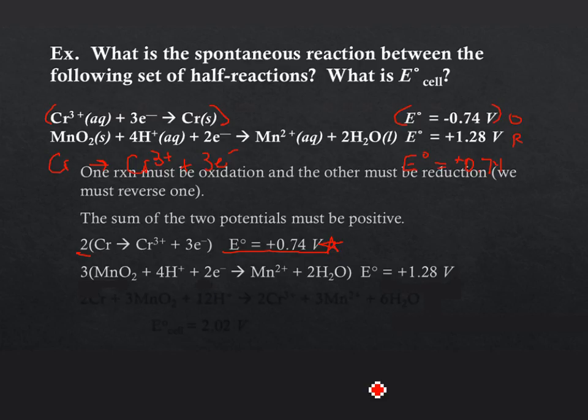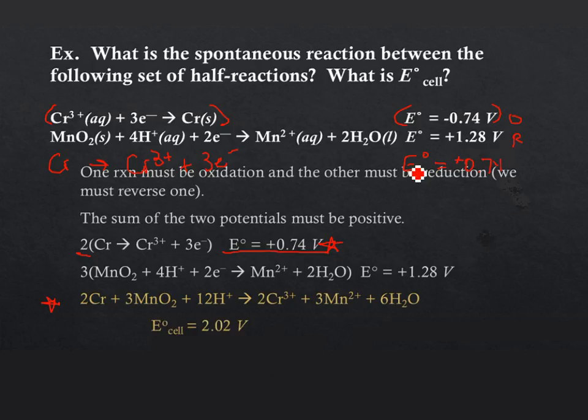And so we have a balanced reaction now in terms of number of electrons. We feel that there are six moles of electrons changing hands. And our balanced redox reaction looks like this. Now, I haven't taken you through this process specifically yet, but we will be talking about balancing redox. And then our cell potential, of course, is the two added values, 0.74 and 1.28 to 2.02 volts.